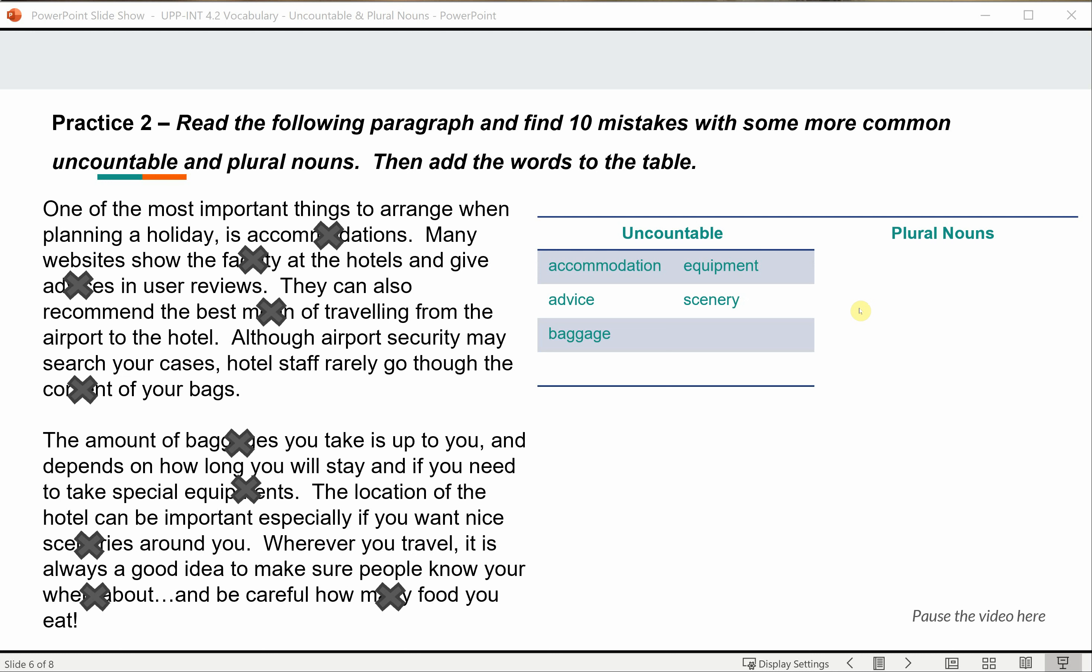So the uncountable nouns here: accommodation, advice, baggage, equipment, and scenery. Plural nouns: facilities, means, contents, whereabouts.